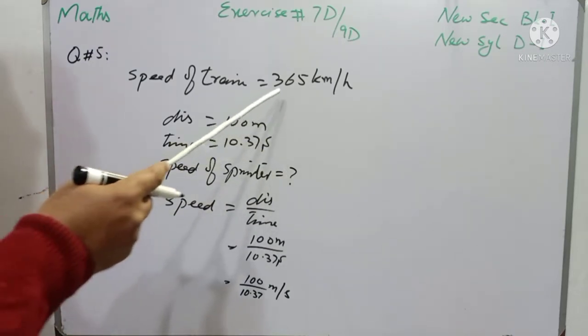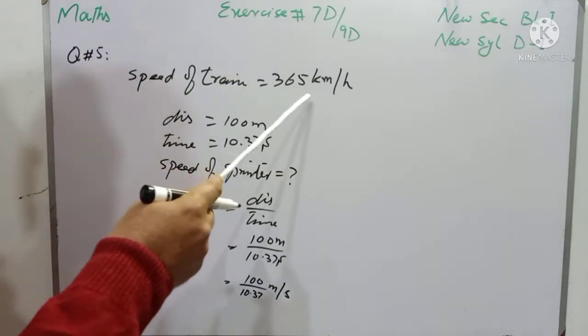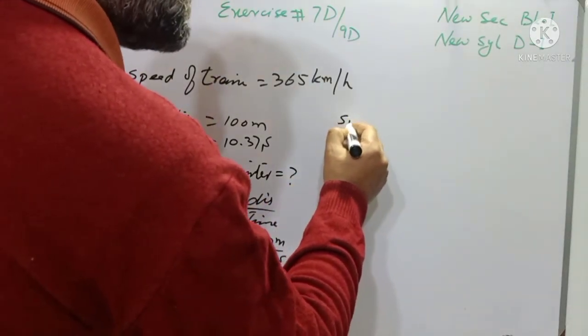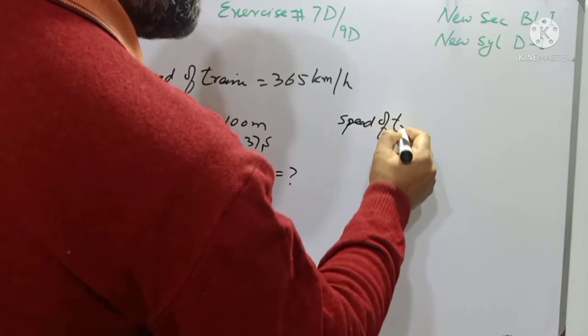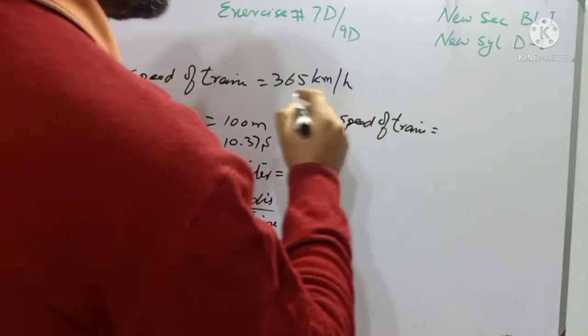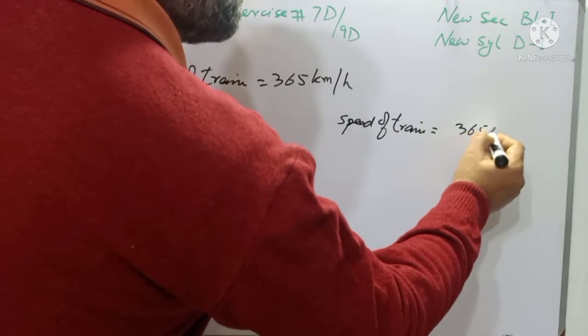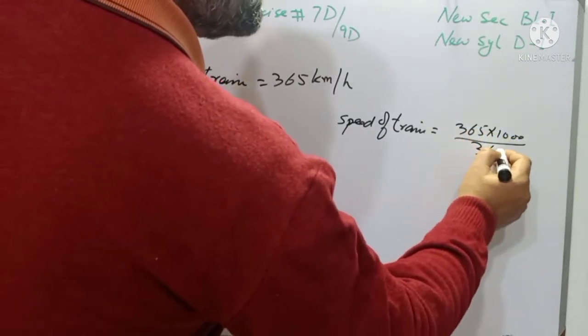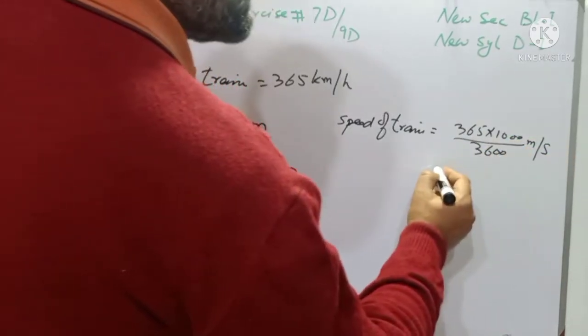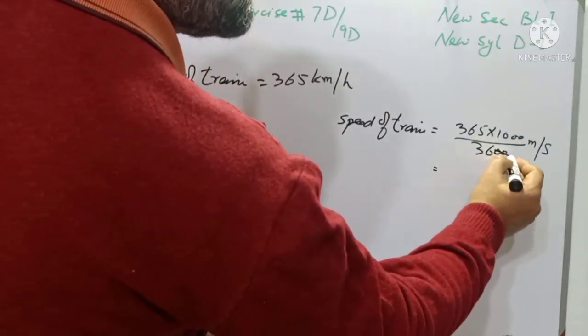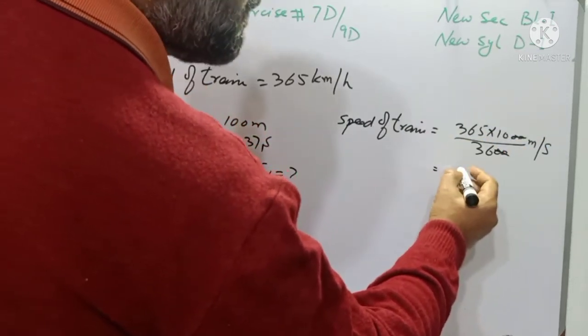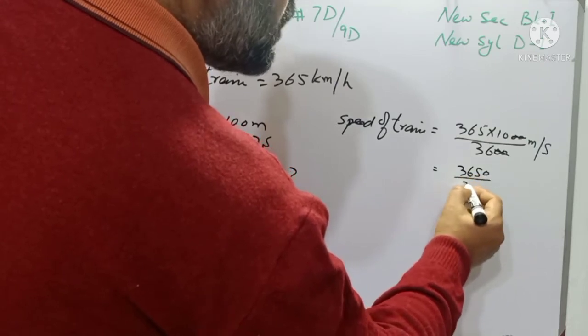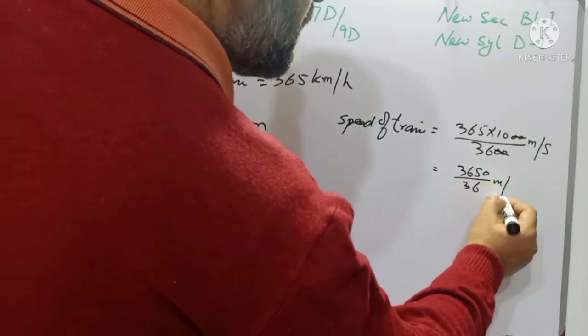So it is better for us to convert the average speed of train into meter per second. So I will write speed of train. And we will convert it: 365 multiply by 1000 divided by 3600, and the unit is meter per second. And last two zeros will be cancelled with last two zeros, and we will write it as 3650 over 36 meter per second.